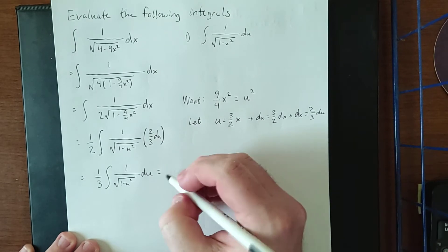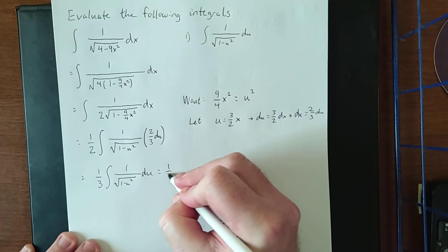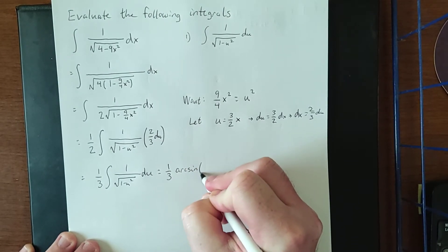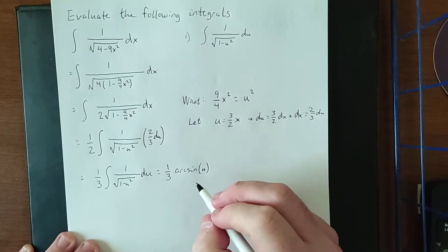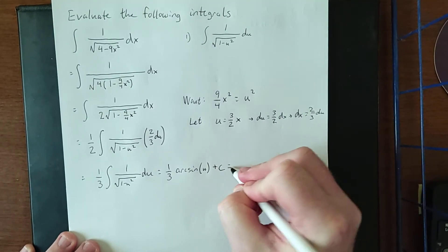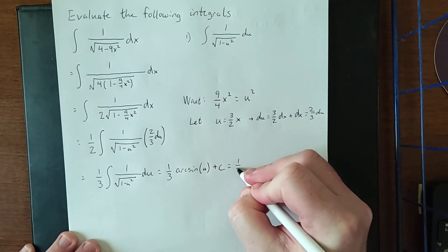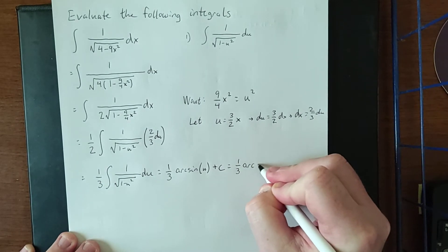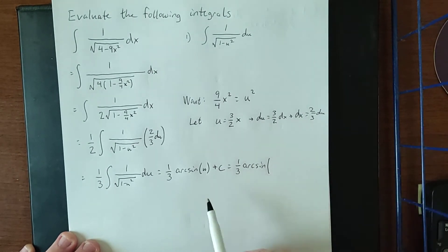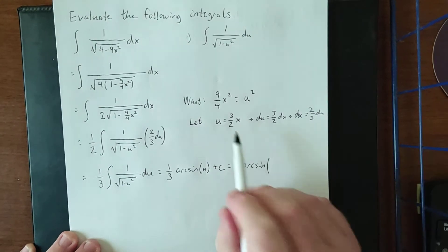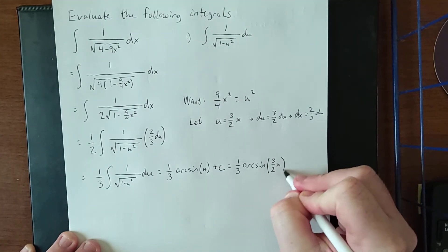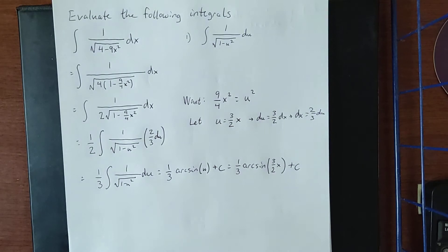That is our basic form, which gives us the arcsin of u. Since this is an indefinite integral, we add plus C. We then substitute back — u was equal to 3/2 x — giving us 1/3 times arcsin of 3/2 x plus C.